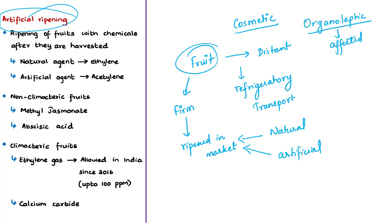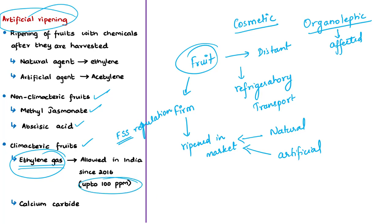At present, the only safe and worldwide accepted method for ripening fruits artificially is by using ethylene. Is artificial ripening allowed in India? Yes, it is allowed. Regulation 2.3.5 of the Food Safety and Standards (Prohibition and Restriction on Sales) Regulations of 2011 allows for the artificial ripening of fruits using ethylene gas at a concentration up to 100 ppm — that is 100 microliters per litre — depending upon the crop variety and maturity. Ethylene gas is the legally permitted chemical for ripening of fruit from 2016.